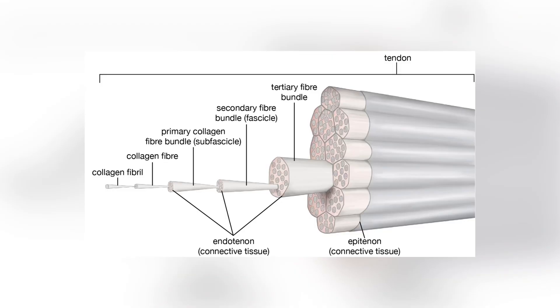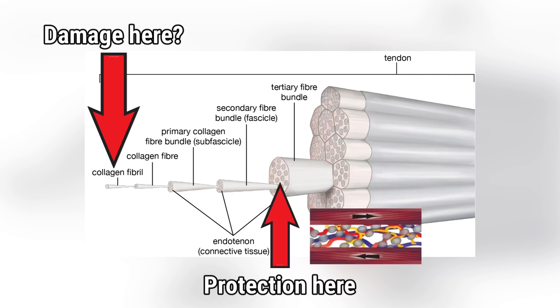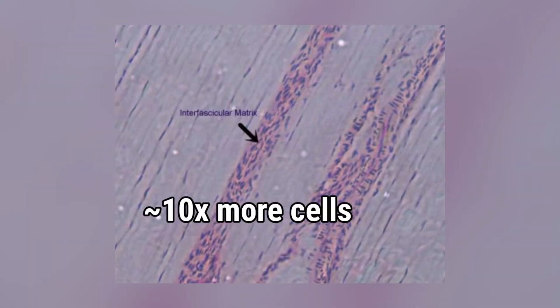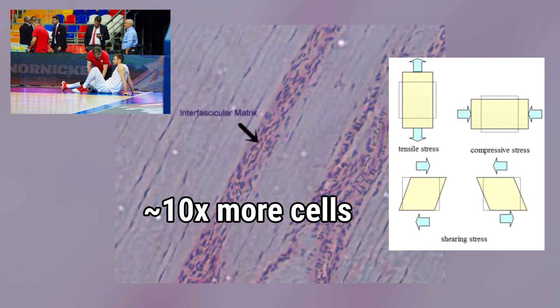So if we look at the old view - that you've disrupted the collagens and the cells around them are sensing this and causing pain - that might not be happening because you're getting protection of overload on the fascicles. This makes sense because if you look at the interfascicular matrix, it has about 10 times more cells, and they're subjected to larger strains of tension, shear, and compression. So when you have tendon pain, at least initial tendon pain, it's probably from the cells within the interfascicular matrix, which are experiencing overload a lot easier and a lot more.